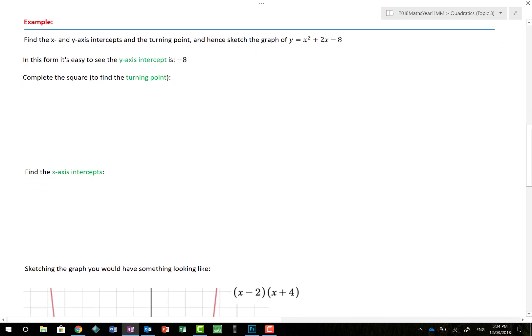You change the order depending on how the question has been given to you. So, in turning point form, you might find the turning point the easiest to find first. But, look, let's deal with an example. We're going to ask to find the X and Y axis intercepts and the turning point, and then sketch the graph of this.